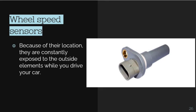Next are the wheel speed sensors. Whenever an ABS warning light appears on the dashboard, the problem is usually related to the wheel speed sensors. These sensors are located on the knuckles pointing towards the speed sensor rings on the drive shafts or wheel bearings. Because of their location, they are constantly exposed to outside elements like dust, water, and dirt. It's common to see rust infiltrating the sensors and damaging the inside components, leading to false readings and DTCs being recorded in the PCM.